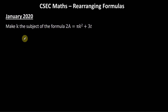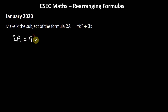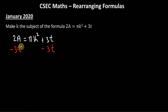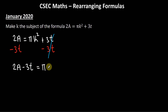Now looking at the question given on the January 2020 paper. Make k the subject of the formula 2a = πk² + 3t. I'll begin by getting rid of 3t — I'm adding 3t, so I'll subtract 3t from both sides. 3t − 3t = 0, leaving me with 2a − 3t = πk².